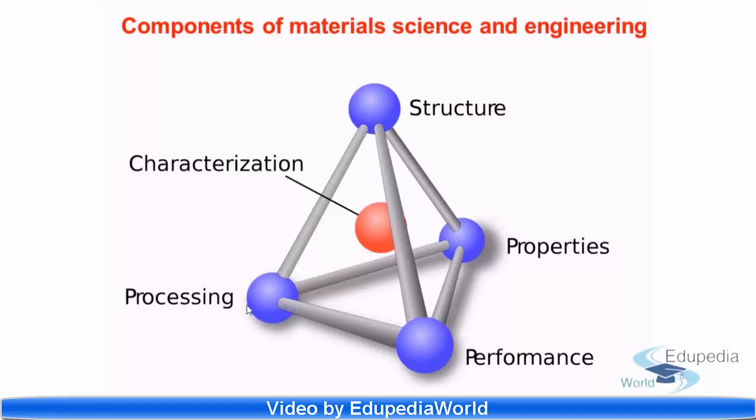Finally, the processing part. The same material, if it undergoes two different processing systems, then the effective property will end up to be different. So processing also affects the properties, even though the material is chemically the same. So this is a holistic picture about material science and engineering and the various components that come together and need to be understood to be an efficient materials engineer.